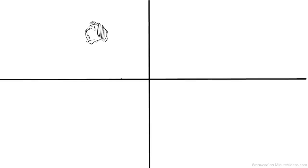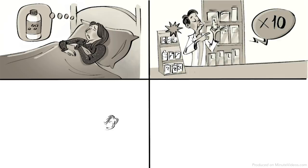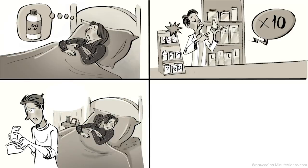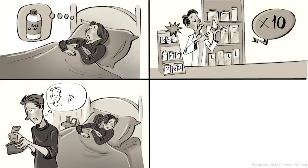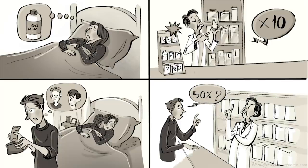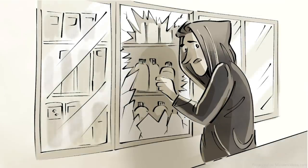The Heinz Dilemma: A woman was on her deathbed. There was only one drug that the doctors thought might save her. However, the druggist that made that particular medicine sold it for 10 times the price of the production costs. The sick woman's husband, Heinz, was poor and could not afford to buy the drug, not even with the financial help of his friends. Heinz then asked the pharmacist to sell it to him for half the price, but he refused. To save the life of his wife, Heinz broke into the man's laboratory and stole the medicine.